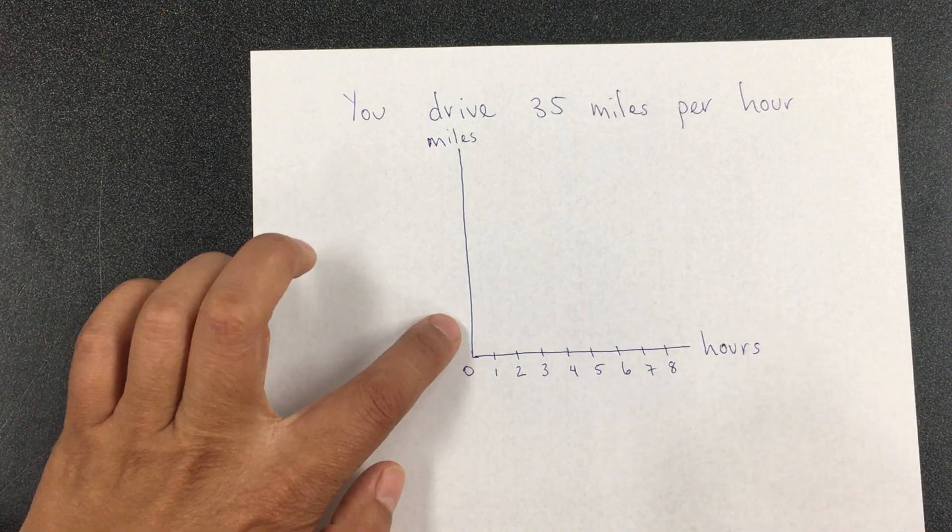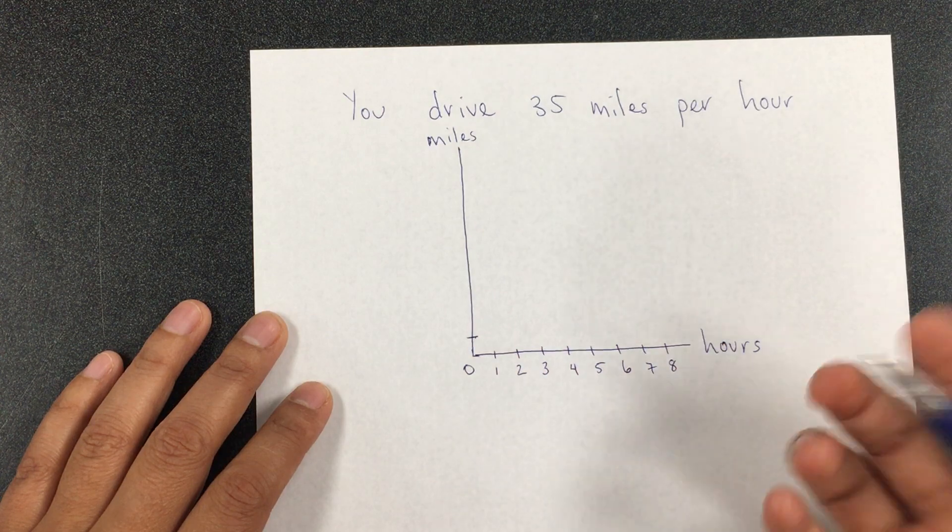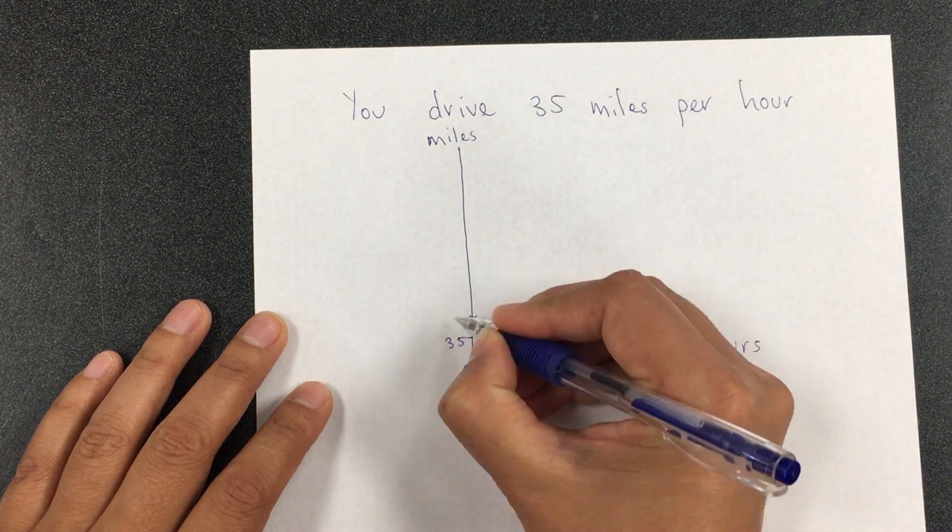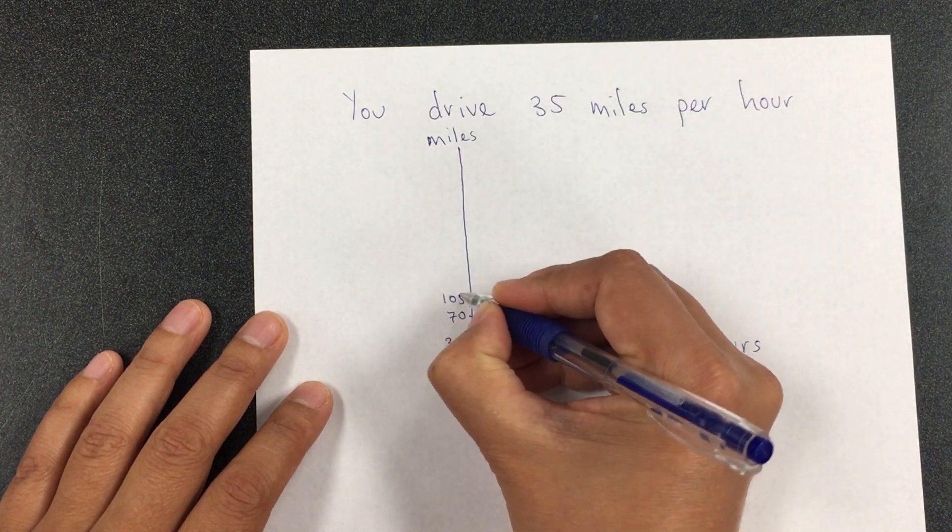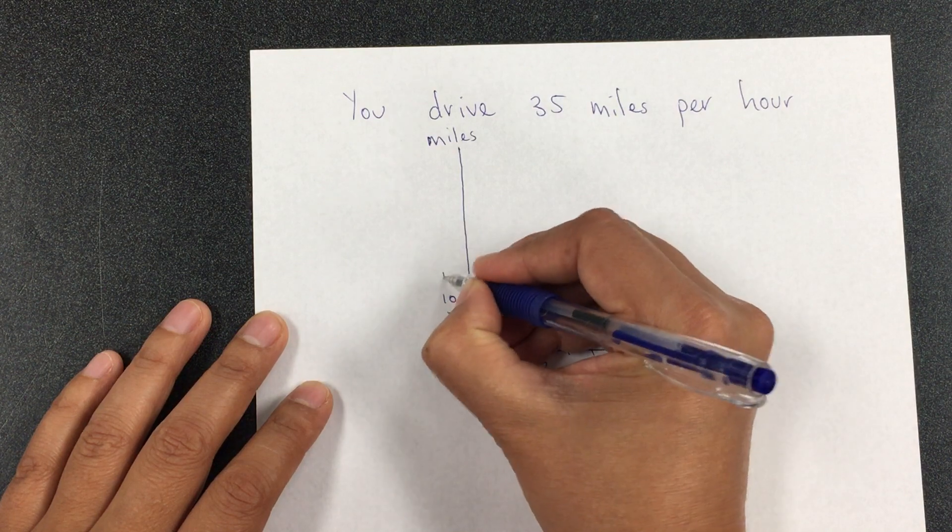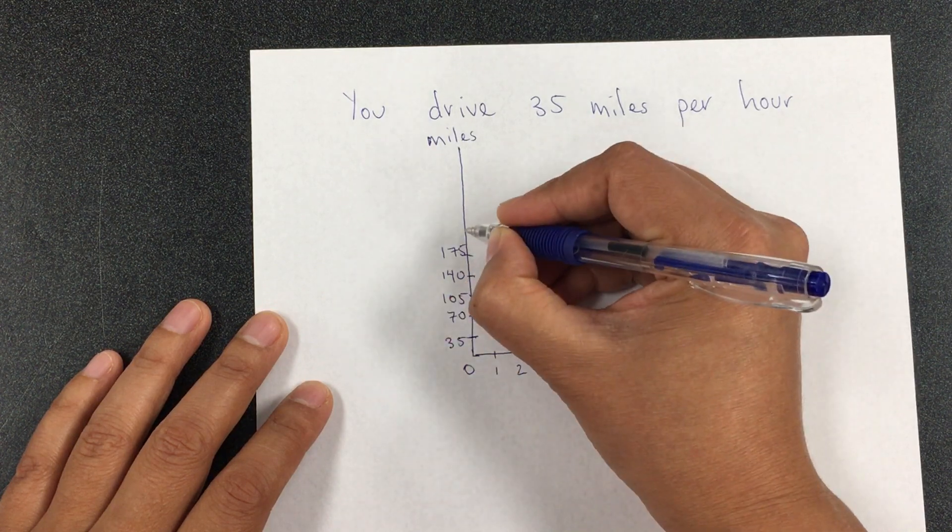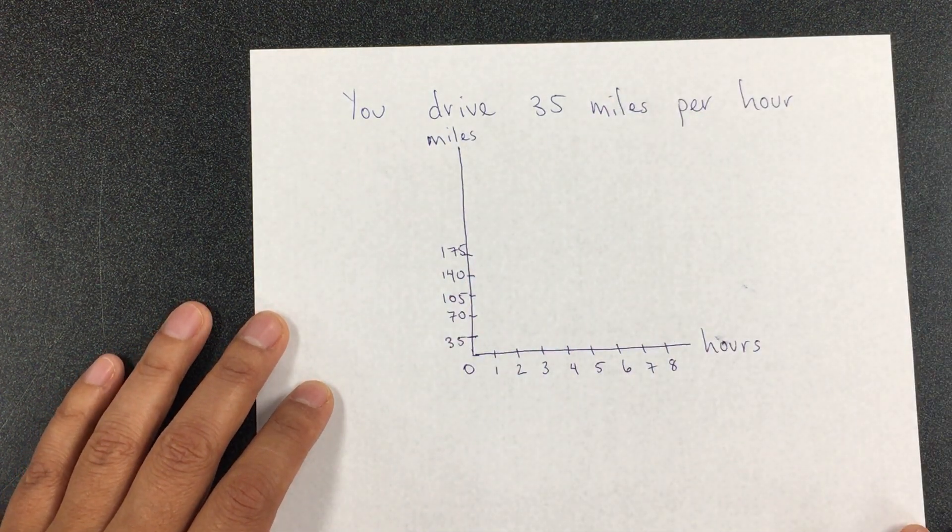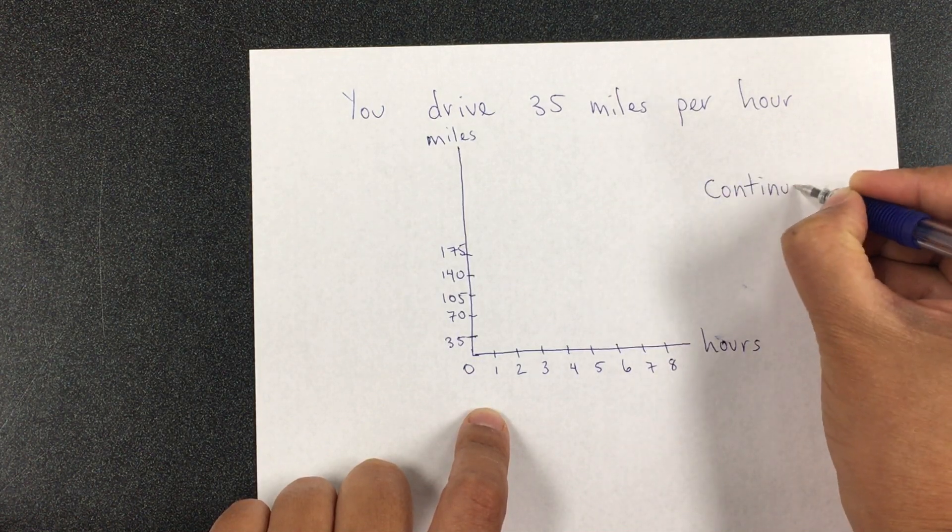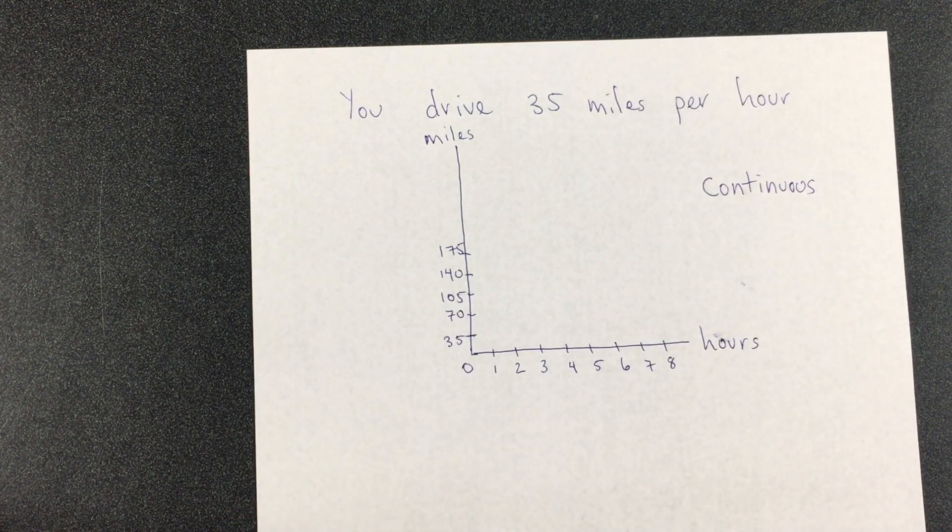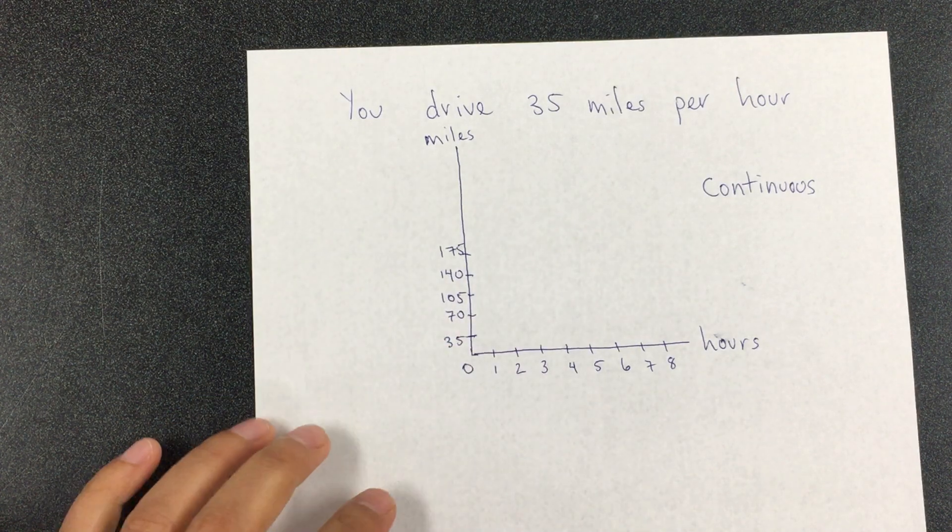On the y-axis, to make our lives easy, we're just going to put 35, 70. I'm just adding 35 each time: 105, 140, 175, etc. Again, we said that this is a continuous graph.